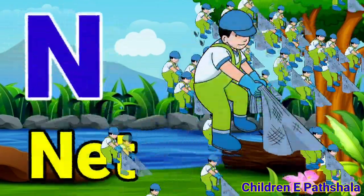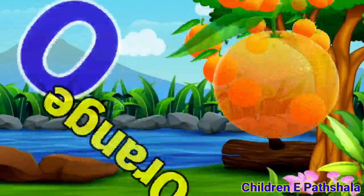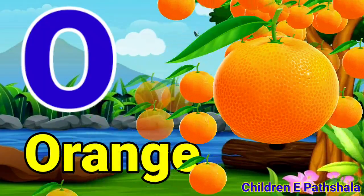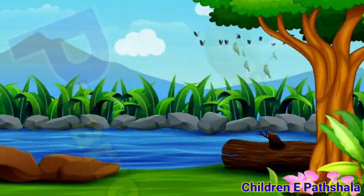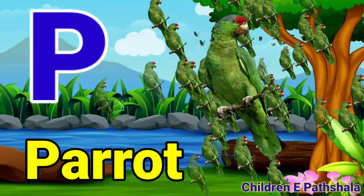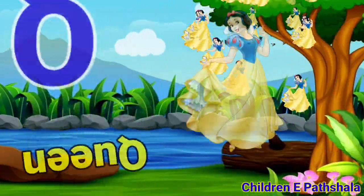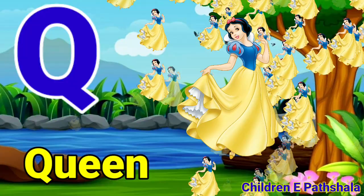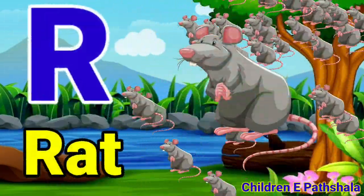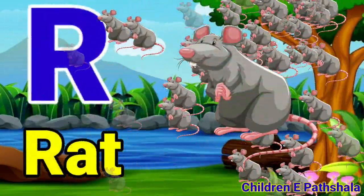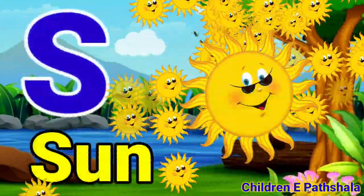N for Net, O for Orange, P for Peril, Q for Queen, R for Red, S for Sun.